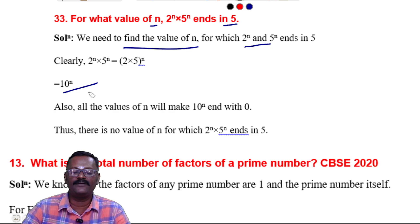So, 10^n, for all values of n will make 10^n end with 0. So, there is no value of n for which 2^n × 5^n ends in 5.